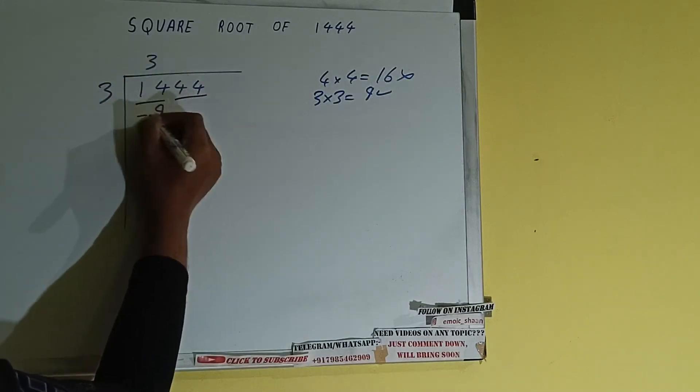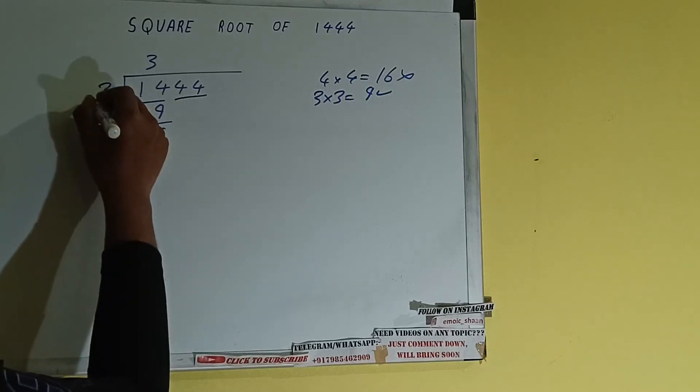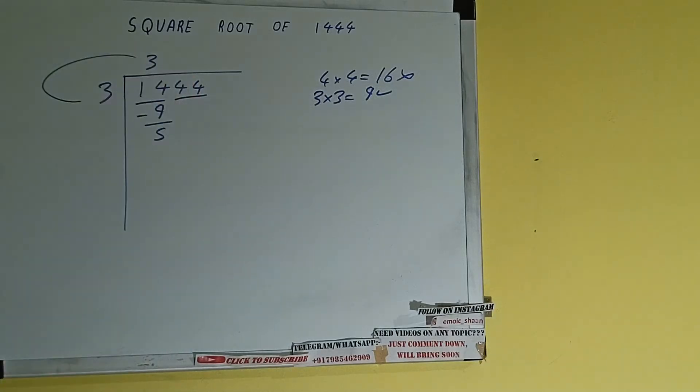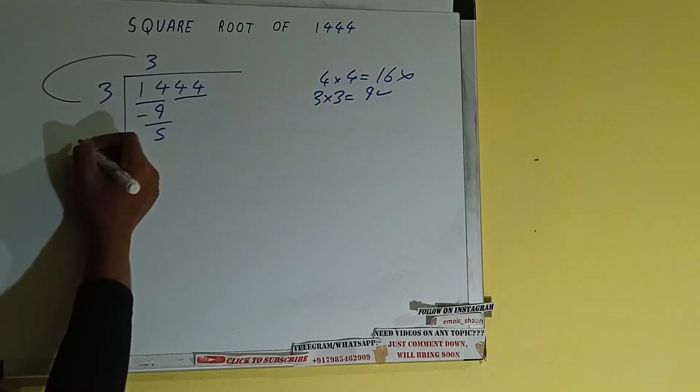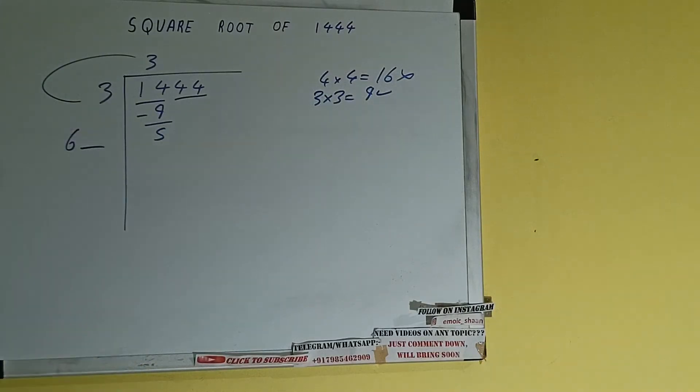9 subtract, 5 will be left. Now we did 3 into 3, so add both. So 3 plus 3 will be 6. Write it here and keep a digit extra, and this number we need to make it big.